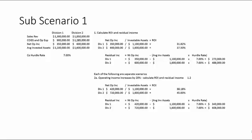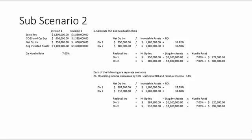For residual income we use those new net operating income figures. For Division 1 that's $420,000 minus $1.1 million times 7 percent, giving $343,000. Compared to the base scenario, you can see how a 20 percent increase in operating income increases both the ROI and the residual income.